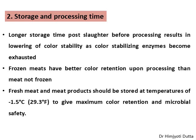The next factor is storage time. Until processing or cooking, the longer you store the meat, the color-stabilizing reduction enzymes get exhausted and cannot cause the necessary color reversion reactions — the enzymes become gradually weaker and the desired color is not obtained. However, frozen meat shows better color reversion than non-frozen meat. The ideal meat storage temperature for beef is -1.5°C (29.3°F) for maximum color retention as well as microbial stability.